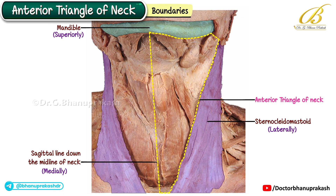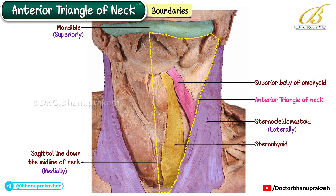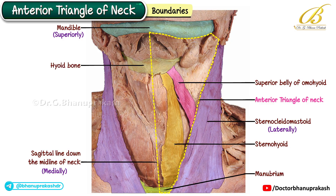On the left side of the image, we can see the superior belly of the omohyoid and the sternohyoid muscle, including the origin of the sternohyoid from the manubrium and its insertion into the hyoid bone. On the right side, the sternohyoid and the superior belly of the omohyoid have been cut and reflected, exposing the sternothyroid and thyrohyoid muscles underneath.